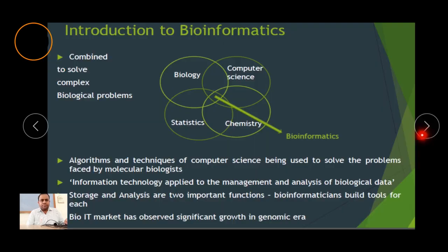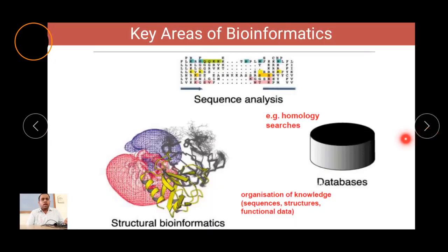Bioinformatics helps us solve complex biological problems. There is a relationship between four disciplines: biology, computer science, chemistry, and statistics — all together bringing bioinformatics at the center. Algorithms and techniques of computer science are used to solve problems faced by molecular biologists, and information technology is applied to the management and analysis of huge biological data. The bio-IT market has observed significant growth in the genomic era.